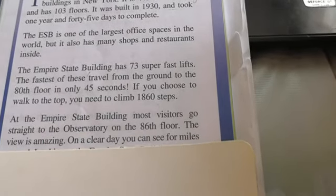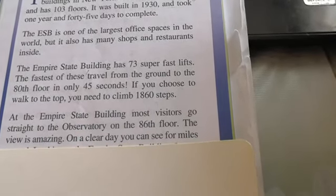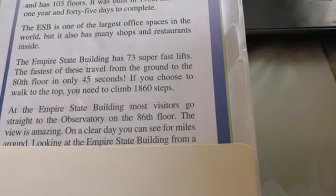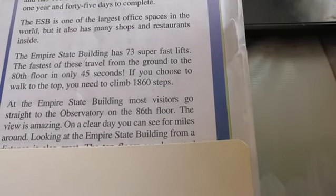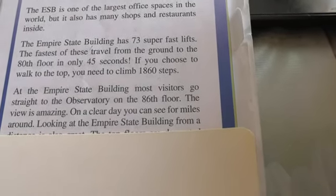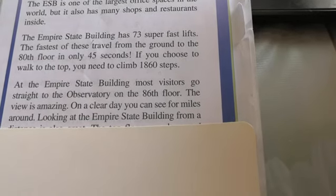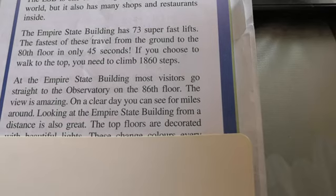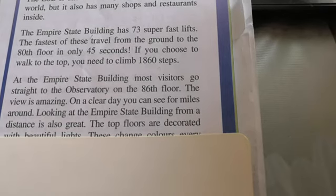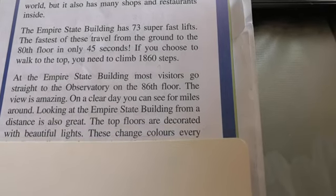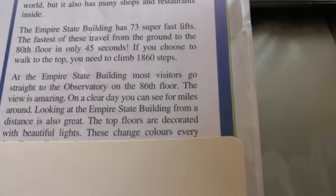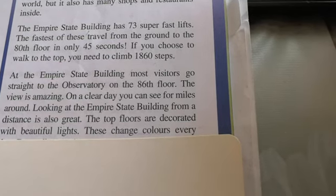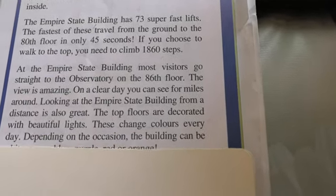Most visitors go straight to the observatory on the 86th floor. The view is amazing. On a clear day, you can see 4 miles around. Looking at the Empire State Building from a distance is also great. The top floors are decorated with beautiful lights.